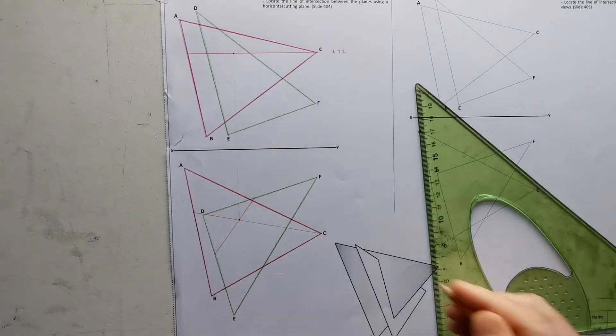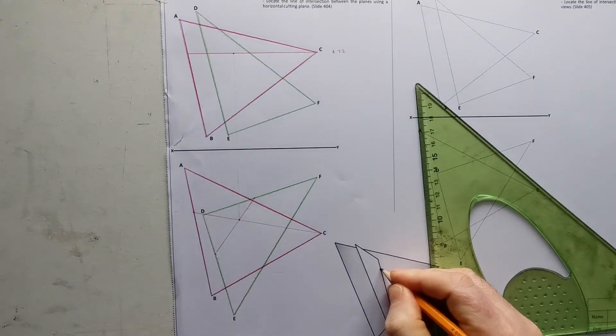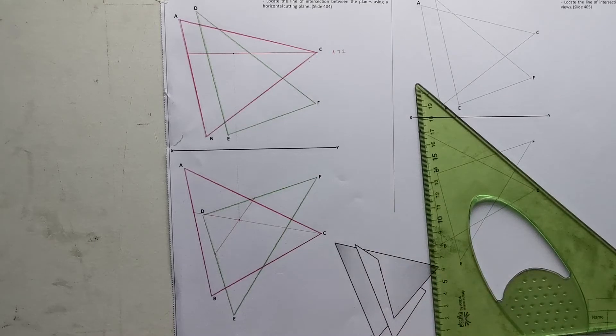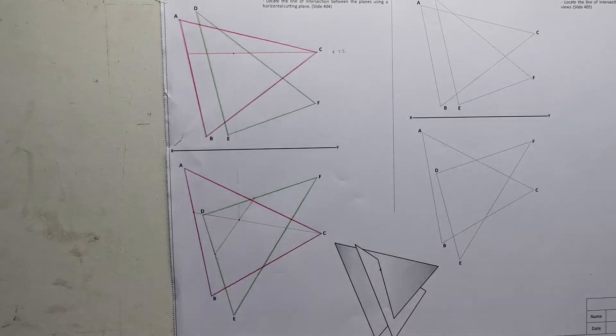And if I wanted now I could bring that back up to the elevation and that there is one point on the line of intersection, probably like this. Now we're going to repeat the process again.